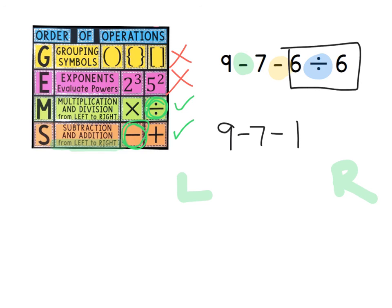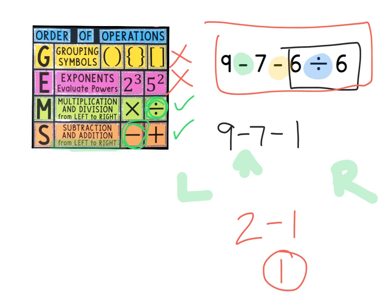If I'm working left to right, 9 minus 7 will come first. So let's work that out. 9 minus 7 is 2 and then I bring down the rest of the problem. 2 minus 1 is 1. So my final answer for this entire problem would be 1.